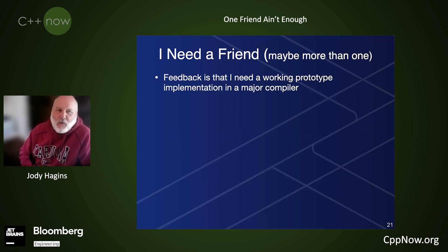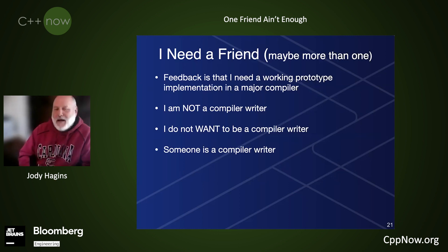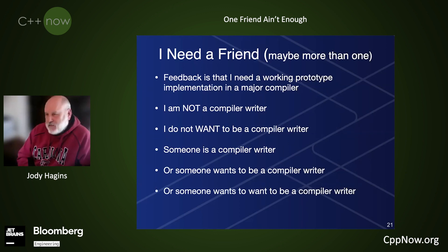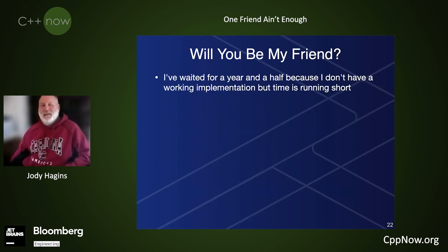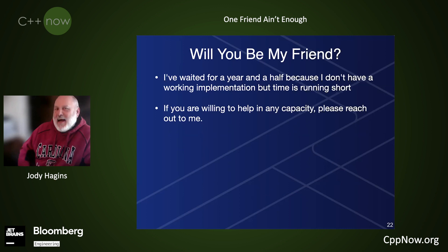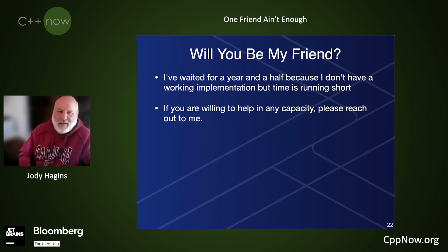The feedback I got was that I need a working prototype implemented in a major compiler before the committee will even give me the time of day. And I'm not a compiler writer, and I don't want to be a compiler writer. But someone is a compiler writer, or someone wants to be a compiler writer, or someone wants to want to be a compiler writer. I've waited a year and a half because I don't have a working implementation, but time's running out. If you're willing to help me in any capacity, please reach out. It seems kind of simple — I actually opened up the Clang source code and looked at it for about 20 minutes and had a headache for six hours.